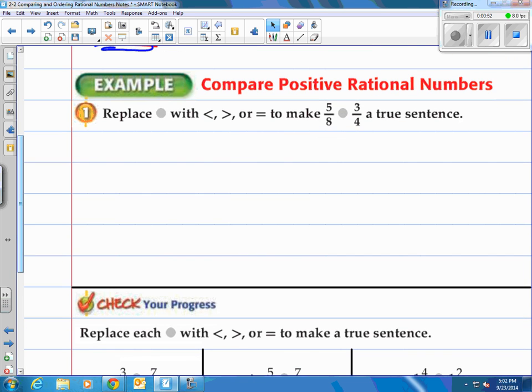They say, replace the little circle with less than, greater than, or equal to to make that statement a true statement. And really, what you're trying to figure out is, 5 eighths, is that less than, greater than, or equal to 3 fourths?